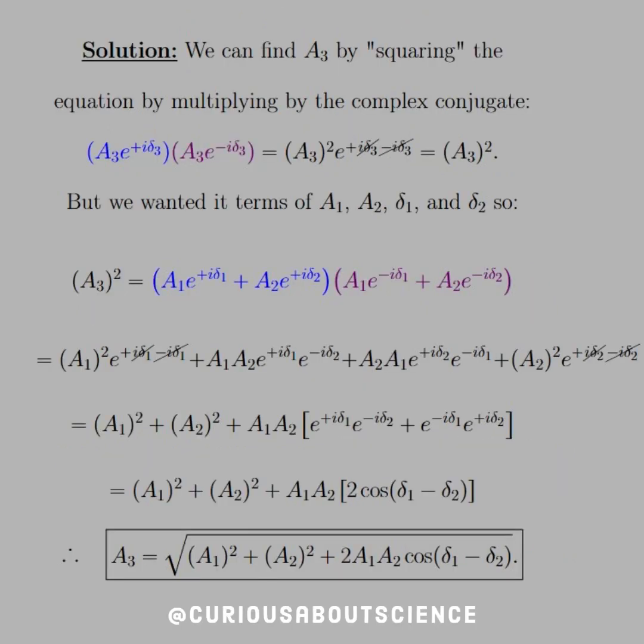So to start with this, we've got to go through the complex analysis tree of thinking. And in order to find A₃, we need to do that by squaring the equation, which is done by multiplying by the complex conjugate. So in the real number, squaring just means that I take one number and multiply it by itself. Squaring in a complex world, you have to take one number and multiply it by the complex conjugate, i.e. change the sign on i. So when we do that, we get A₃e^(+iδ₃) times A₃e^(-iδ₃), which is in blue and purple, respectively.